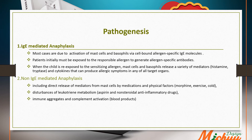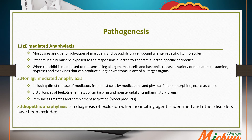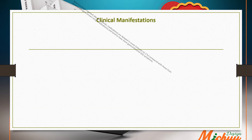Non-IgE-mediated anaphylaxis includes direct release of mediators from mast cells by medications and physical factors such as cold, exercise, and morphine. It also includes disturbance of leukotriene metabolism by aspirin and NSAIDs, and immune aggregates and complement activation such as with blood products. The third type is idiopathic anaphylaxis, a diagnosis of exclusion where no inciting agent is identified and other disorders have been excluded.